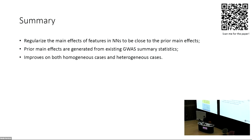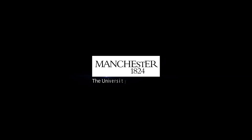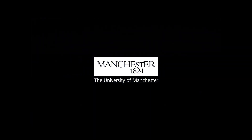In summary, we propose a main effects prior to make use of publicly available GWAS summary statistics to improve machine learning models in a small-data setting for the genotype-phenotype prediction task. Thank you for your attention — I'm open for questions.